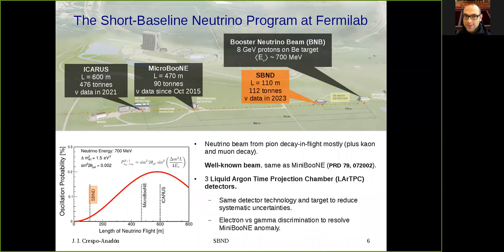The first liquid argon TPC is SBND, at 110 meters away from the production target. It has 112 tons of liquid argon in the active volume and is expected to start taking neutrino data in 2023. MicroBooNE, at 470 meters away from the neutrino production target, has 90 tons of active liquid argon and has been taking neutrino data since October 2015. Finally, we have ICARUS, at 600 meters away from the production target. It has 476 tons of active liquid argon and is expected to start taking neutrino data this year.